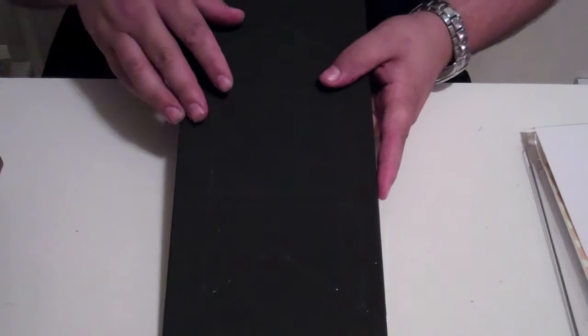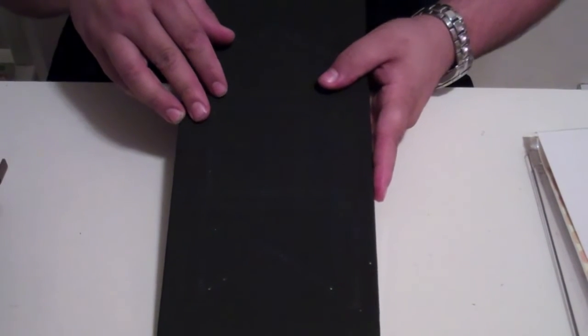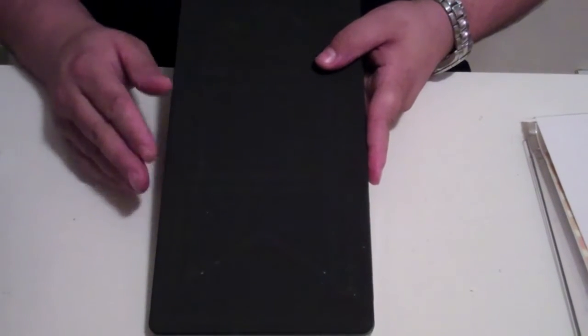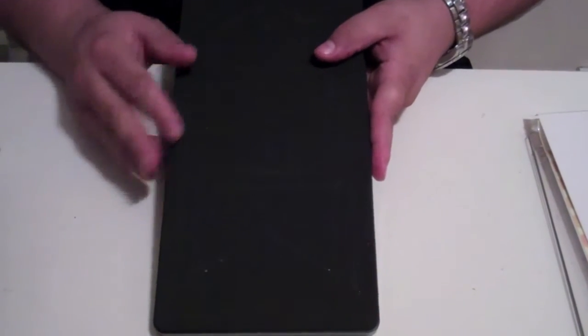Now, the thing that you want to remember with this is, is I used the Sizzix Vagabond. With this, you could also use the Big Shot. So those are the two options that you can use to cut this out. So let me show you how I did it, okay?